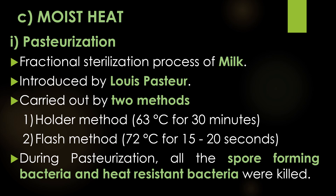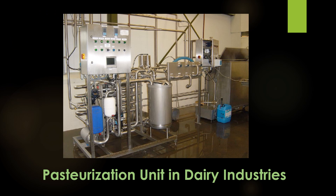In the Holder method, the temperature is low and the duration is long — 63 degrees Celsius for 30 minutes. In the flash method, the temperature is high and the duration is short — 72 degrees Celsius for 15 to 20 seconds. During the pasteurization process, all spore-forming bacteria and heat-resistant bacteria are killed. This image shows the pasteurization unit used in dairy industries.